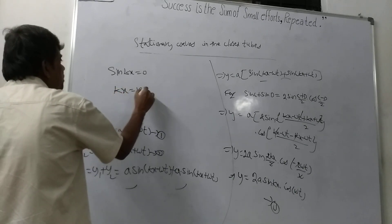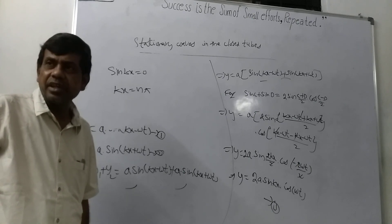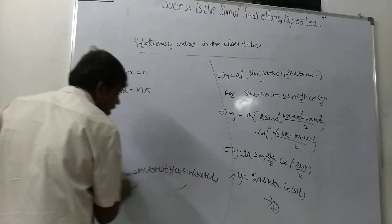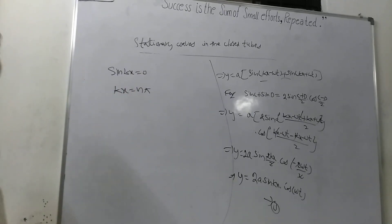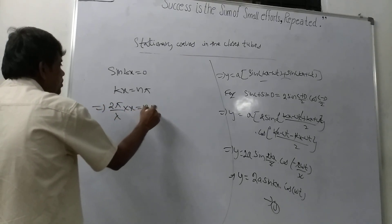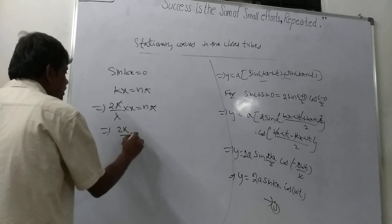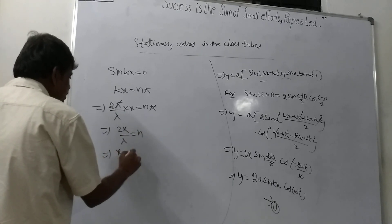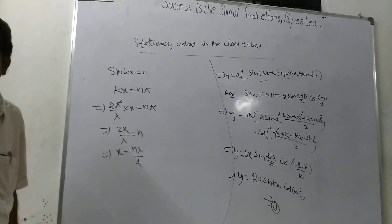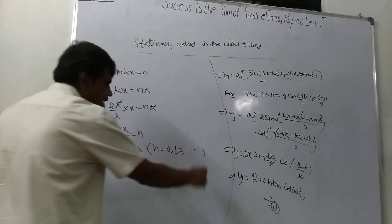So kx equals n pi in mathematics. The angular wave number k equals 2pi by lambda, so substituting: 2pi by lambda into x equals n pi. Therefore x equal to n lambda by 2, where n equals 0, 1, 2 and so on.